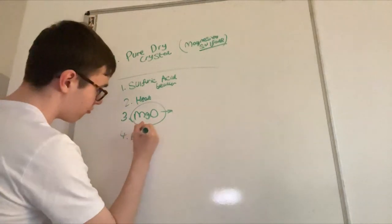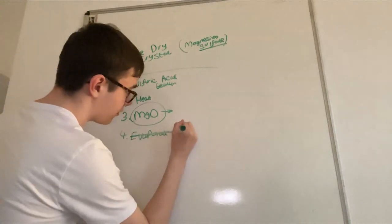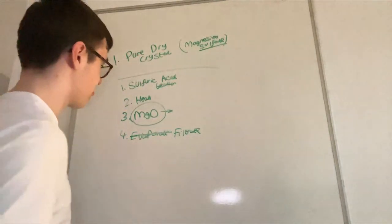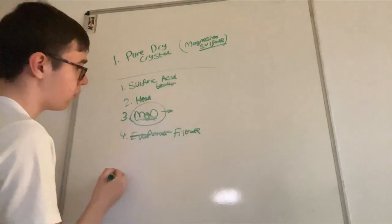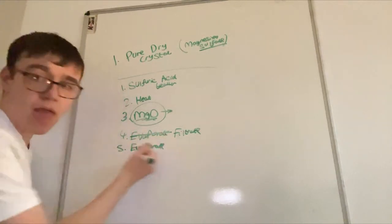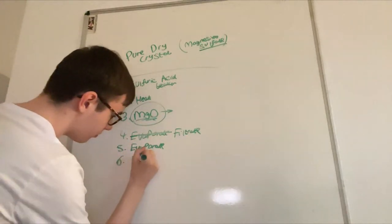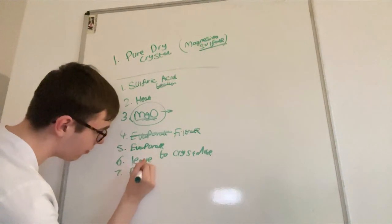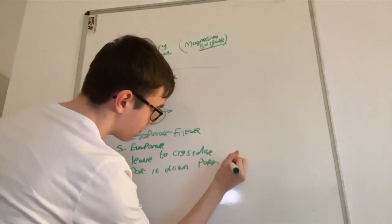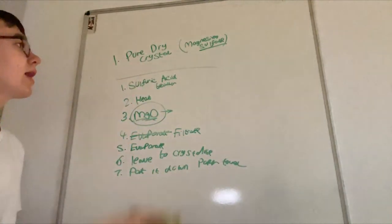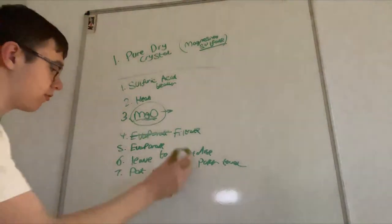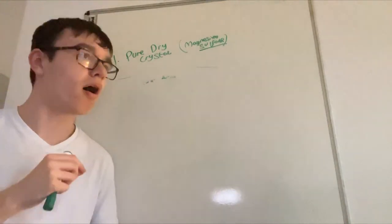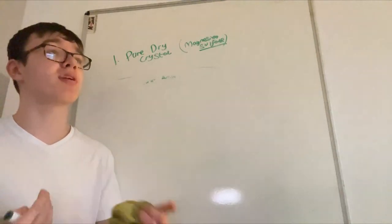Now here I almost said evaporate, but that's wrong - you want to filter it first, getting rid of the excess. Then you evaporate, then leave it to crystallize. Because it's a pure dry crystal, you can pat it down with a paper towel. You would also add more detail in an exam - for example, explain why you add heat: to increase the rate of reactions because of collision theory.